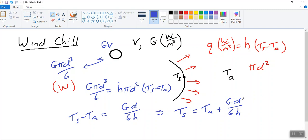So what that's saying is that the temperature of this object is going to be the air temperature plus a certain factor that depends on the metabolic heat generation. So obviously on g, so the more metabolically active this object is, or the more heat it's generating, then the warmer it's going to be. But also its diameter, the diameter of this object, divided by 6 times h.